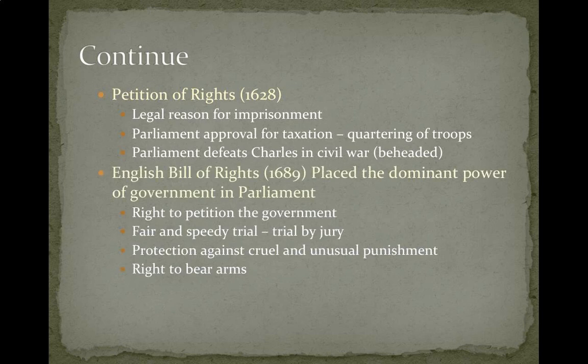Then the English Bill of Rights in 1689 continued taking power from the king and placing it into the hands of Parliament. This document gave people the right to petition and challenge the government. It established speedy and fair trials, trial by jury, protection against cruel and unusual punishment, and the right to bear arms. These are all things we're familiar with today, but at one point in time they were not the norm.